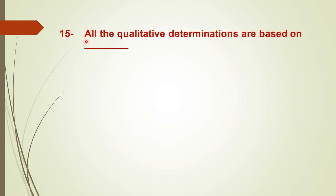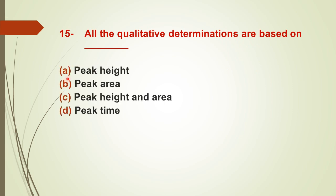Question number fifteen: all qualitative determinations are based on dash — options: A) peak height, B) peak area, C) peak height and area, D) peak time. The right answer is D — peak time. The time at which the peak appears gives us qualitative analysis, telling us which elements are present in the sample.